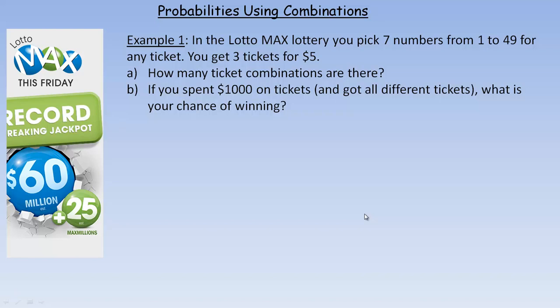In this video tutorial we'll take a look at calculating probabilities using combinations. There are two examples here, one on this page and one on the next. In the first one, it says in the LottoMax Lottery you pick 7 numbers from 1 to 49 for any ticket, and you get 3 tickets for $5. The first question asks how many ticket combinations are there?